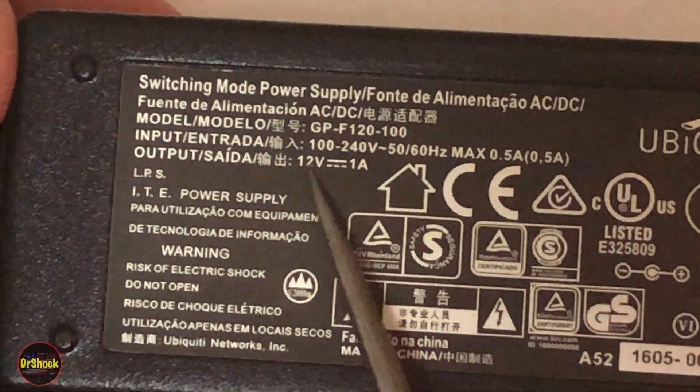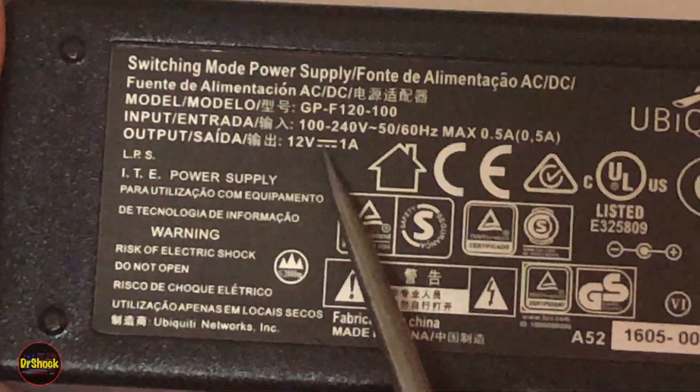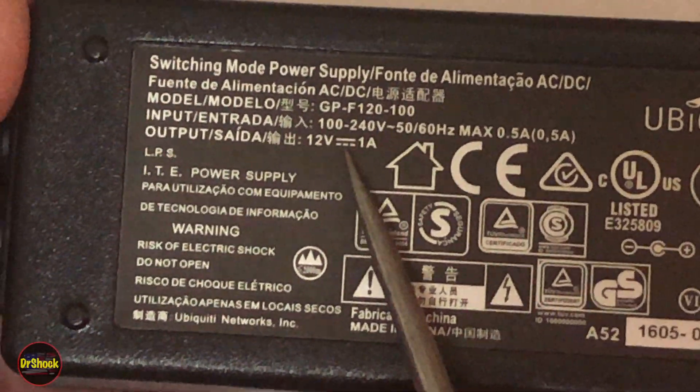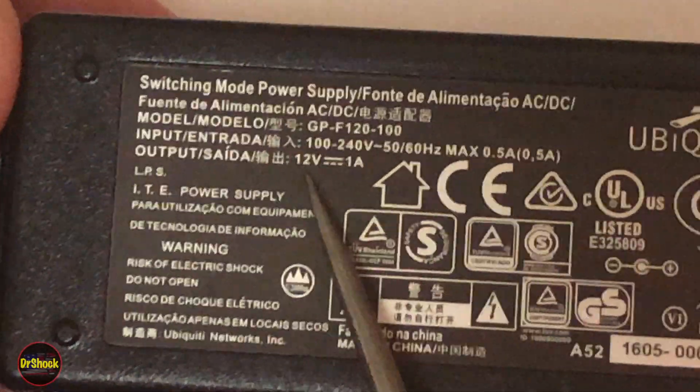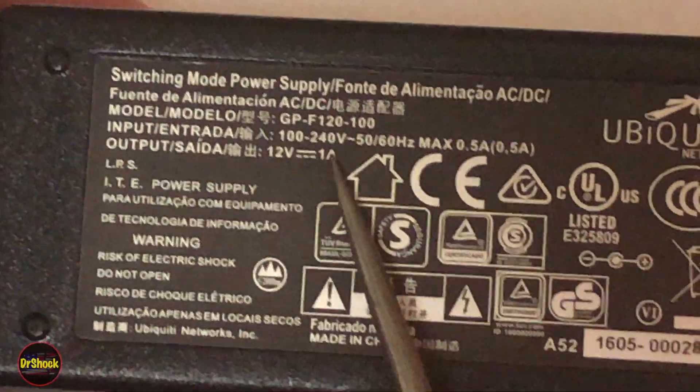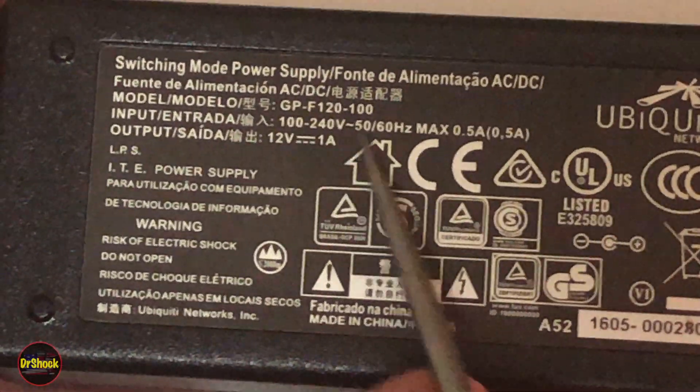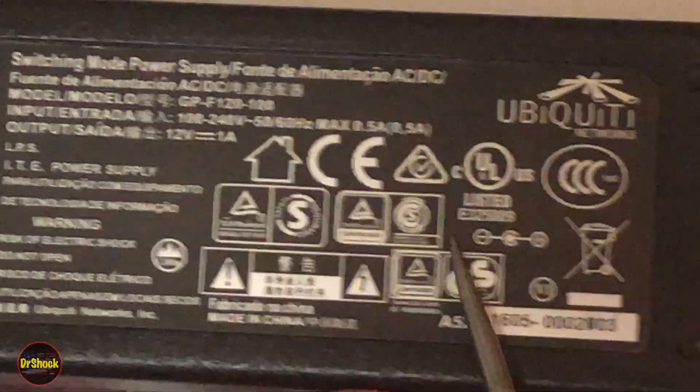You see it says 12 volts, 12V, and this symbol next to it with a solid line and a dash line indicates direct current. So what that tells you is this guy puts out 12 volts direct current at one amp. So that's part of the information you need to know.